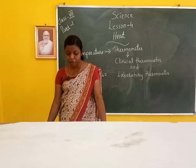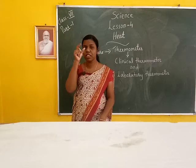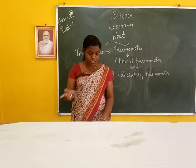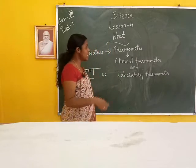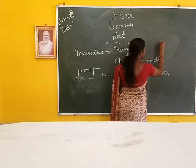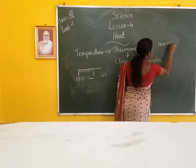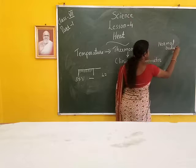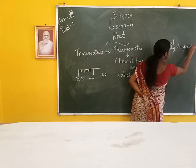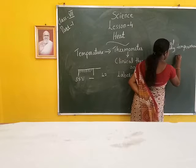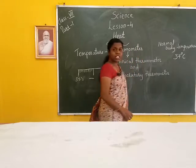Read the temperature on the thermometer at the level of the top of the mercury thread. The normal body temperature of a human is 37 degrees Celsius.